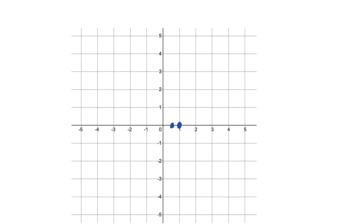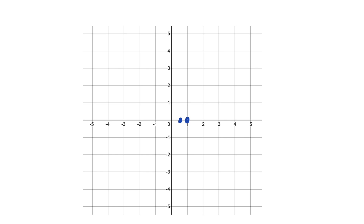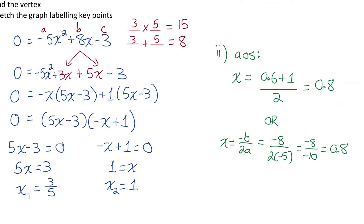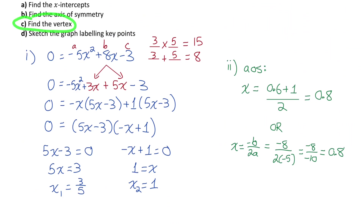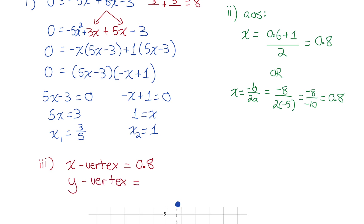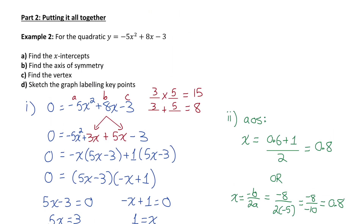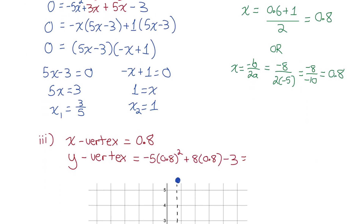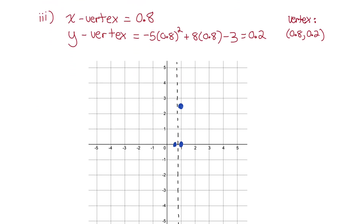So the axis of symmetry is the vertical line x equals 0.8. The vertex falls on that axis of symmetry, so the x-coordinate of the vertex is 0.8. For part 3, to find the vertex, I know the x-coordinate is 0.8. To find the y-coordinate, I sub 0.8 into the standard form equation, which gives y equals 0.2. So the vertex is at the point (0.8, 0.2), which is very close to the x-axis.